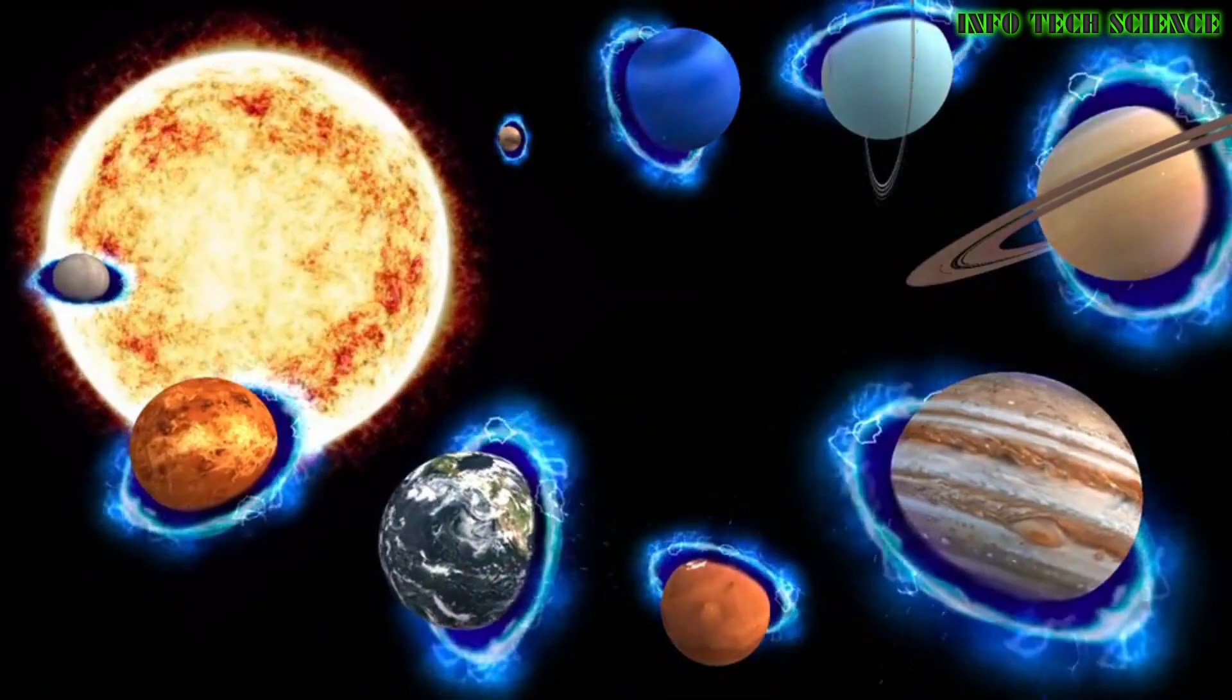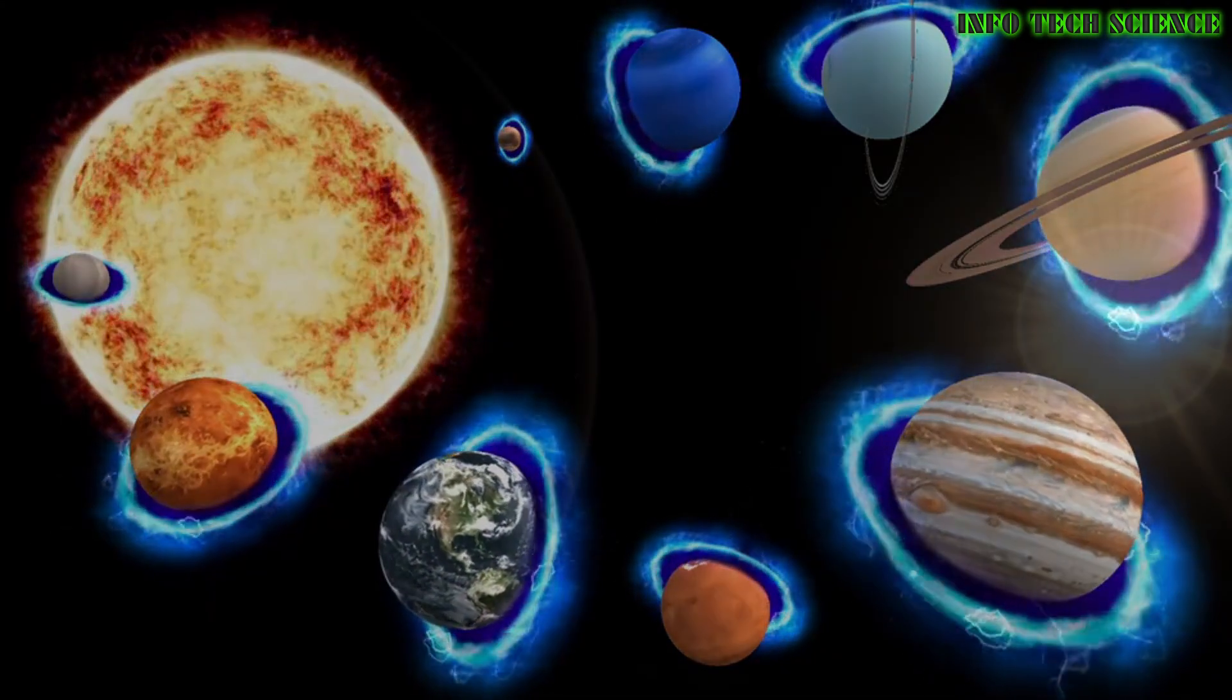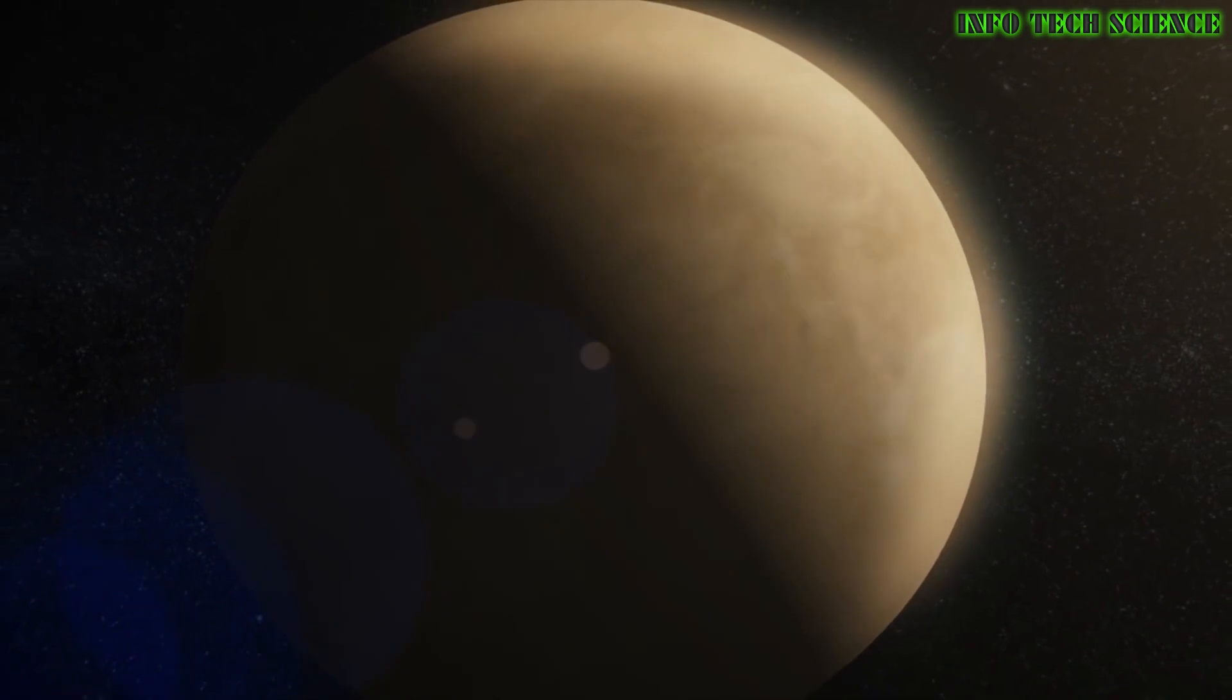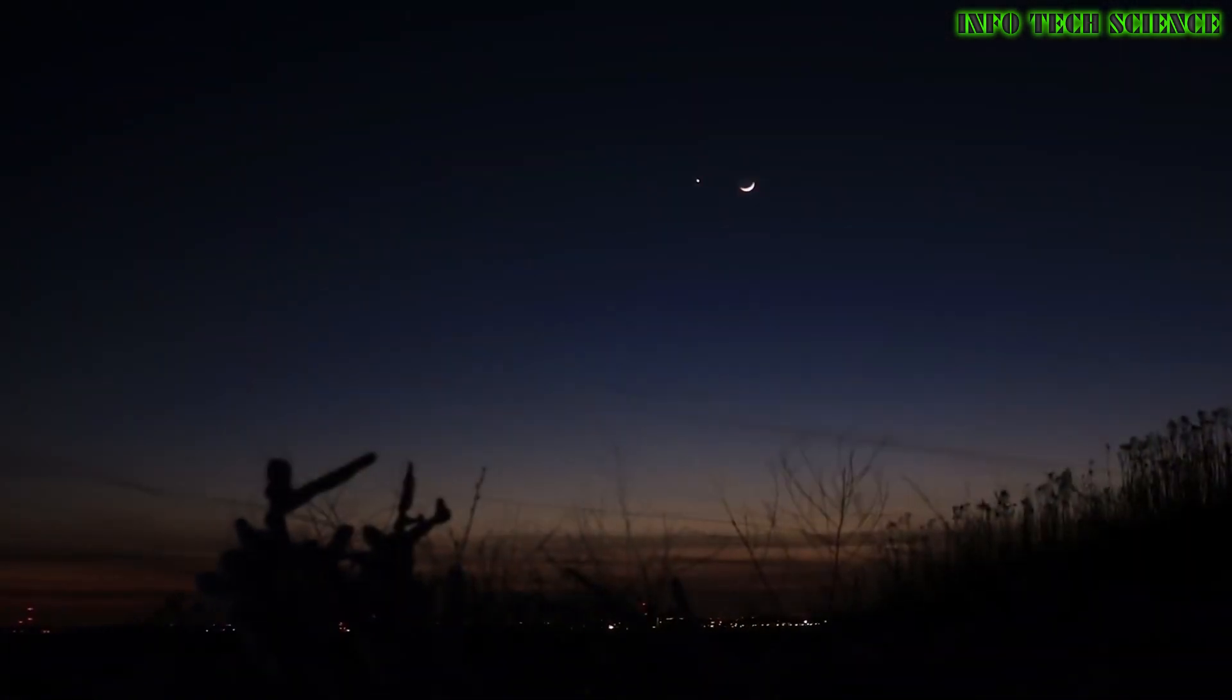As for Venus, our closest neighbor, scientists have suggested that it started rotating counterclockwise, then slowed down to be almost static before starting to spin clockwise like it does now. This might explain the planet's very slow rotation speed today.